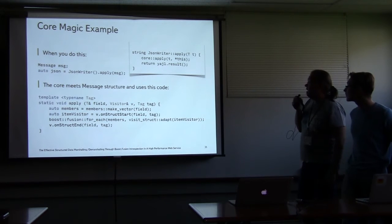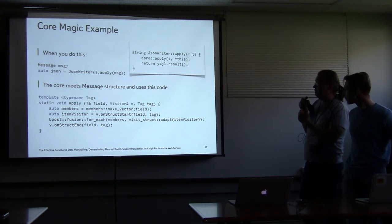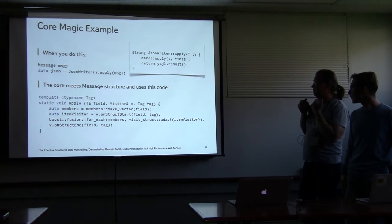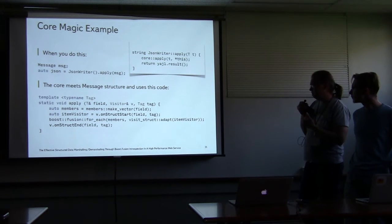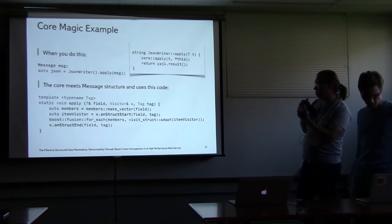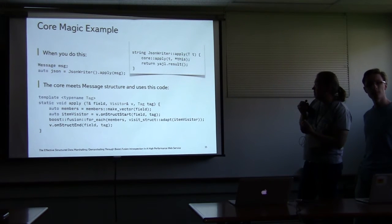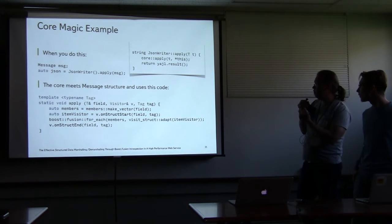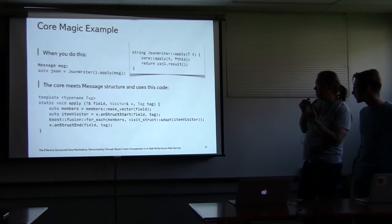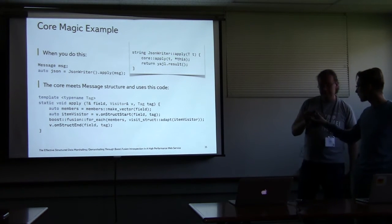This is an example of the magic then for the message. There are several functions for different types. For example, they're different for vector. This is an example for structure. Here is the core provides two events for the JSON writer. The first, on struct start, which marks the start of structure. The core expects some actions from the JSON writer on these events.